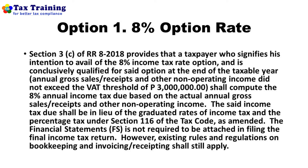The eight percent payment represents two kinds of taxes: the percentage tax and the income tax. Financial statements are not required to be attached when filing the final income tax return if you opt for the eight percent option rate. However, existing rules and regulations on bookkeeping and invoicing shall still apply — the blogger must maintain books of accounts and issue receipts for all transactions.